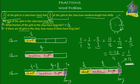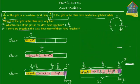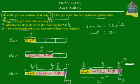For part B, if there are 36 girls in the class, how many have long hair? All twelve units together equal 36 girls. So if twelve units equal 36 girls, then one unit equals 36 divided by 12, which is 3 girls. Since only one unit represents the long-haired girls, the number of girls with long hair is three.